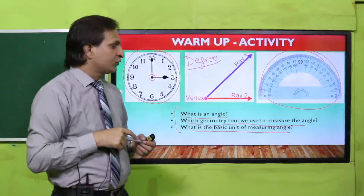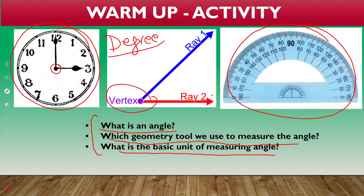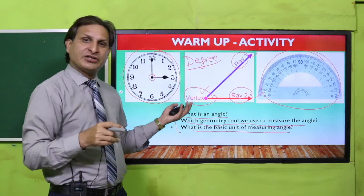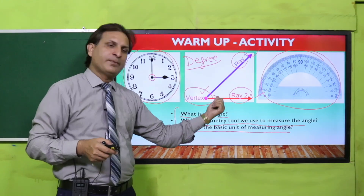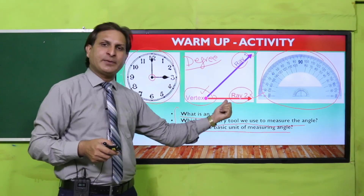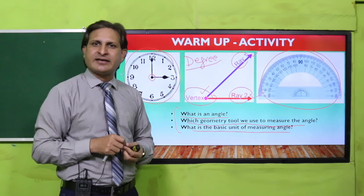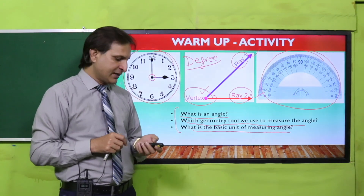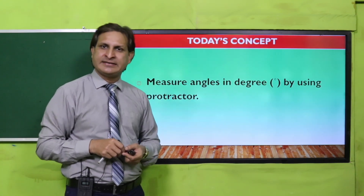Students, aapko pata hai ki vertex kya hai, ray 2 kya hai, aur ray 1 — yeh arms of angles hain aur yeh vertex hai. Aapne observe karna hai aur ab aapne try karna hai is tool ko use karte hue isko measure karna. Aap notebook lein, isi tarah ki shape apne notebook ke upar draw karein aur isko measure karne ki koshish karein. You can get help from your teacher. Ab aaj ke jo concepts hain jinhe humne discuss karna hai.